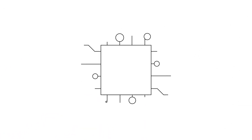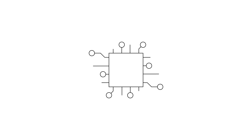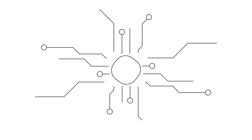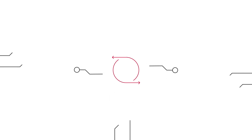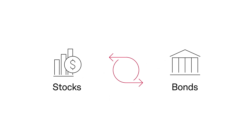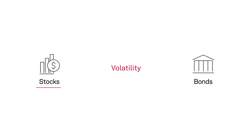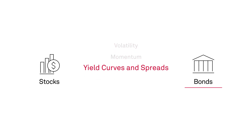Today, advances in index technology have enabled index-based solutions that can dynamically shift allocations to stocks and bonds based on various market signals such as volatility, momentum, and yield curves and spreads.